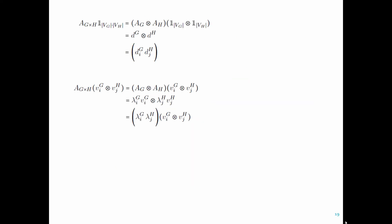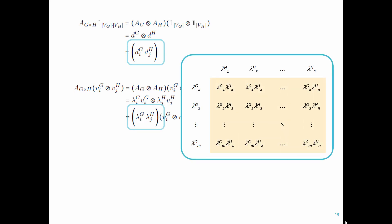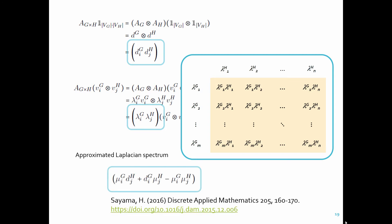The spectral properties of this direct product multi-layer network also can be computed, or estimated at least, from the spectral properties of its factor networks. In this case, the degree sequence and the adjacency spectrum of the product network are obtained exactly again by calculating the products of individual degrees or eigenvalues of its factor networks. The Laplacian spectrum is not exactly computable, but I previously published a heuristic approximation to estimate its Laplacian spectrum, so that's also good news.